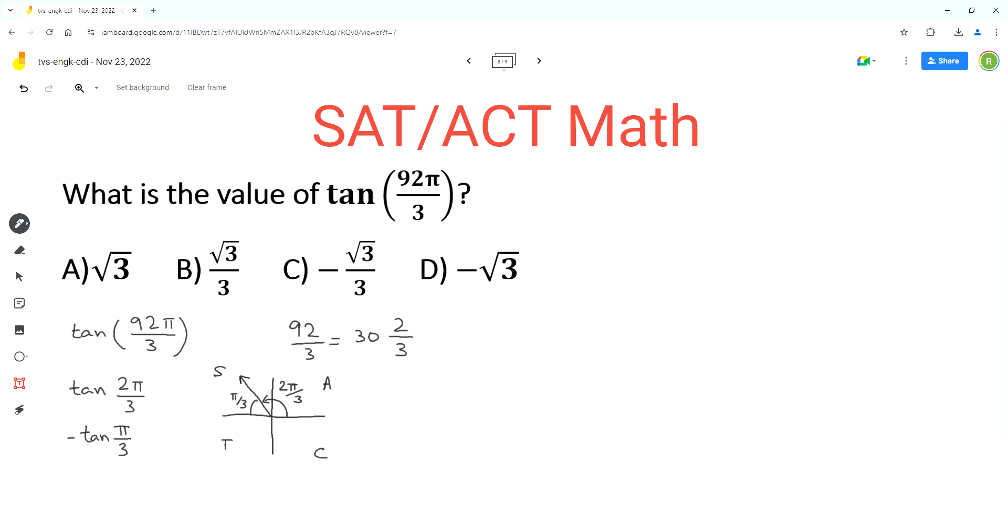If we use the special triangle, we have to use the π over 3, π over 6, and π over 2 triangle. The formula for tan is opposite over adjacent.